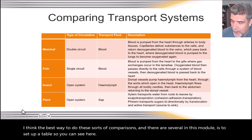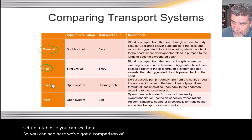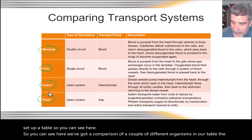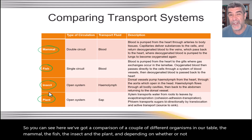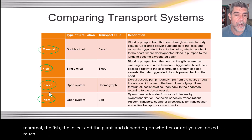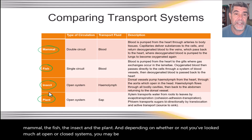You can see here we've got a comparison of a couple of different organisms in our table: the mammal, the fish, the insect, and the plant. Depending on whether or not you've looked much at open or closed systems, you may be able to expand on this table a little bit.